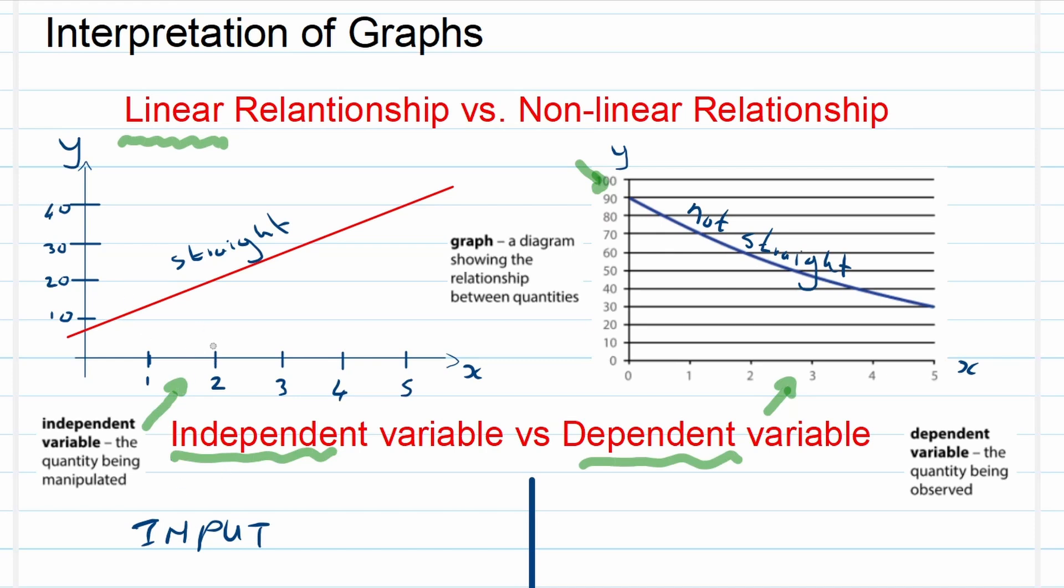Now according to this graph it's 20. So you can see the input value is I'm asking at this amount of time, two minutes, and then the output value, which is the dependent variable, will then be my answer. In two minutes there's 20 jelly beans in a bucket. So the output is dependent on the input.